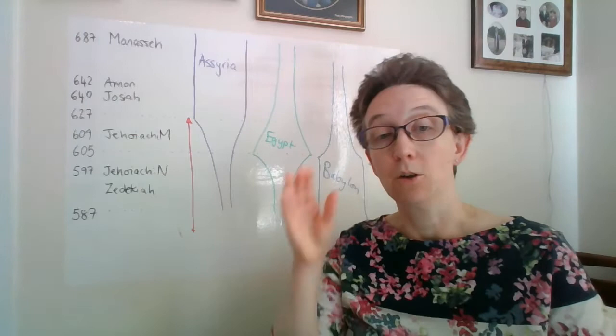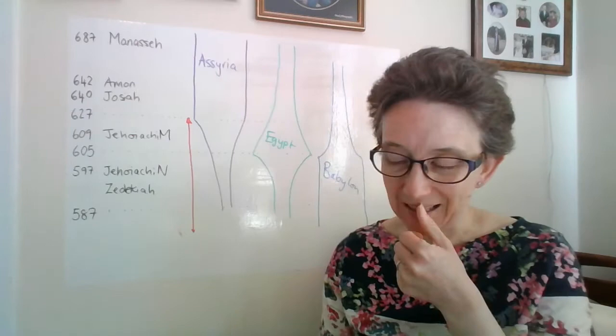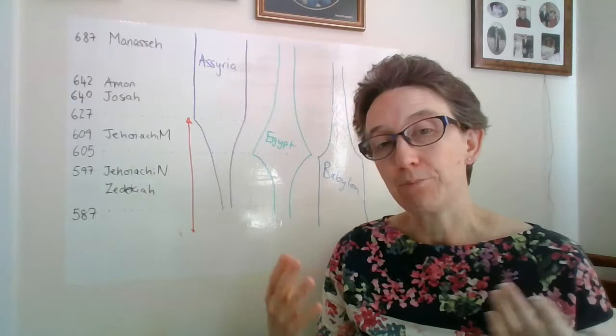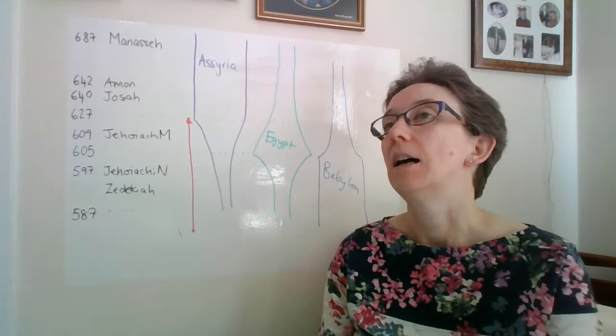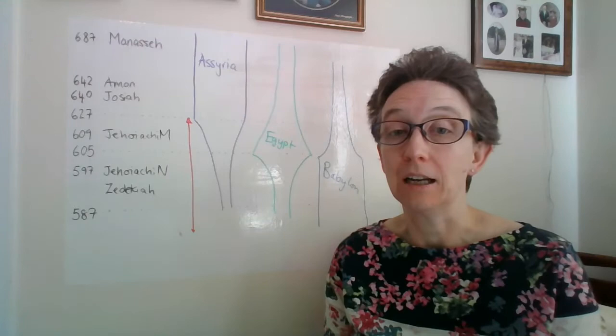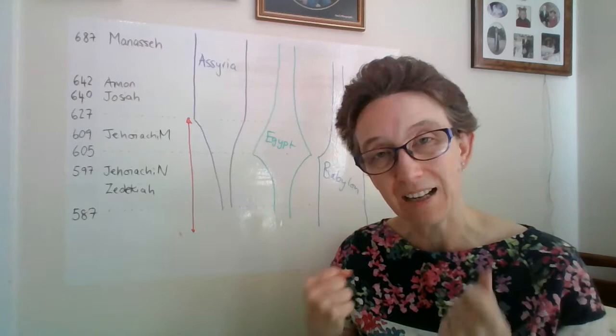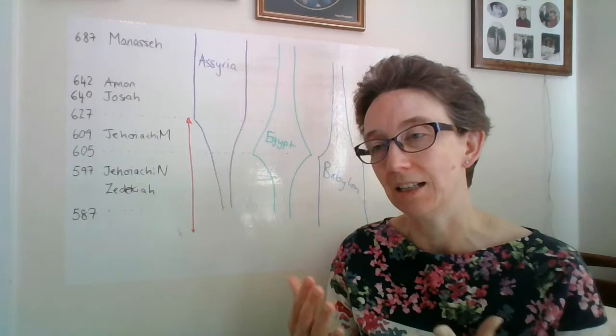In chapter 27, continuing this same theme, Jeremiah makes a wooden yoke and he puts it on his shoulders. This is an enacted prophetic action like we've been talking about. The message of this prophecy is you need to submit to the yoke of Babylon. This is a message to the king: surrender to the king of Babylon, wear his yoke. This is not a welcome word. In the following chapter, a false prophet called Hananiah challenges Jeremiah for this. He actually goes up to Jeremiah and takes the yoke off his shoulders and breaks it and says, Thus says the Lord, I will break the yoke of Babylon, and tries to reverse that prophecy.